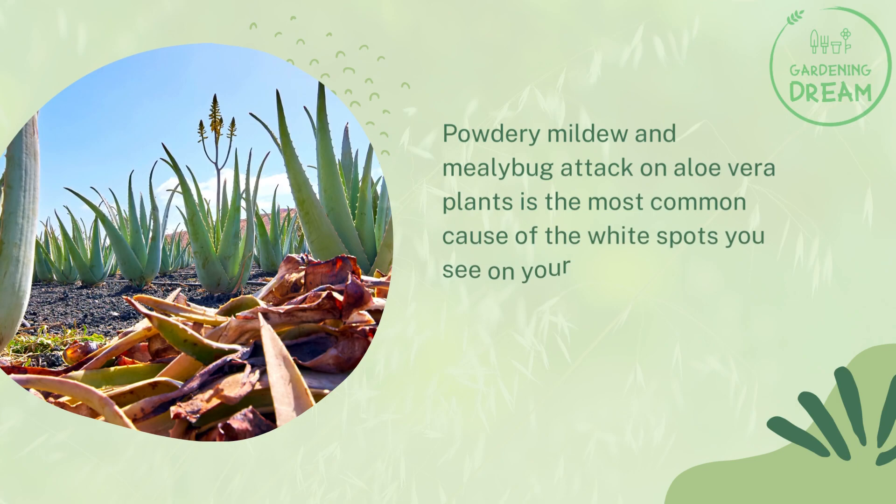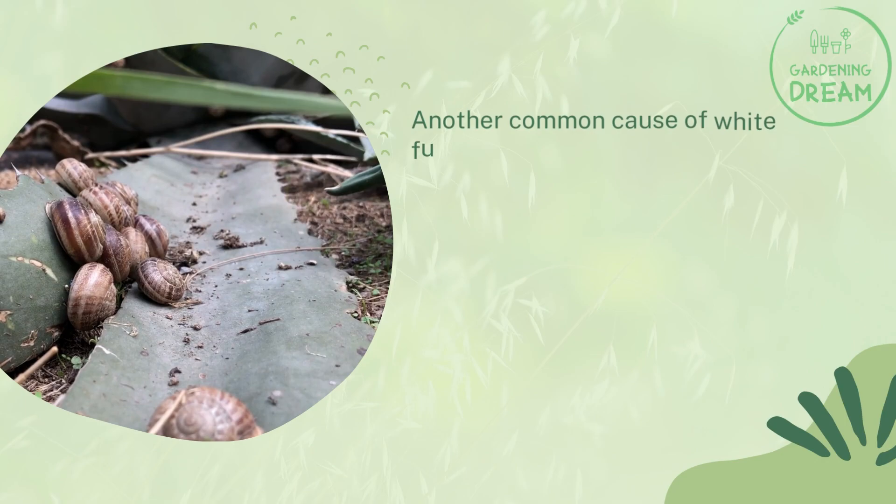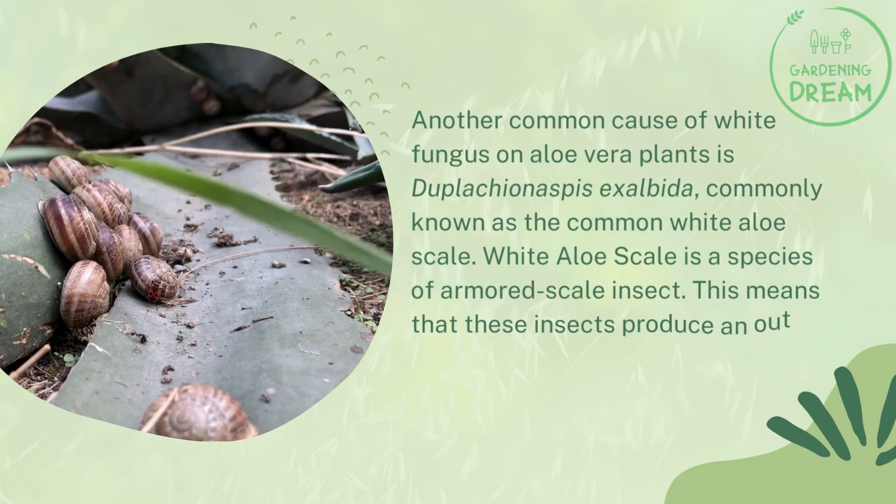The cause of powdery mildew is either excessive sunlight exposure or lack of light exposure. Another common cause of white fungus on aloe vera plants is Duplacheanaspis exalbitda, commonly known as the common white aloe scale. White aloe scale is a species of armored scale insect.